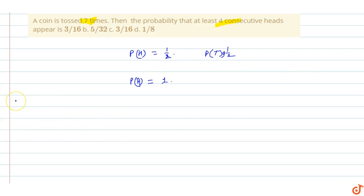So that at least four consecutive heads. First case, what happens? So which is equal to 1 upon 16.